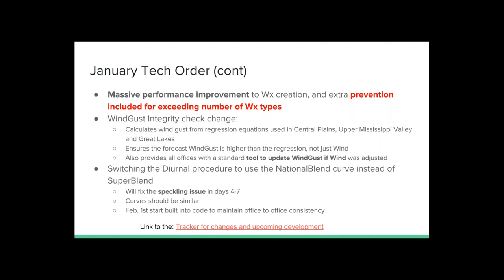Another thing: wind gust. We have an issue where if you modify the winds output from, say, the Superblend, you don't have anything for doing the gust. The integrity check right now is just checking whether wind gust is greater than wind — we need something more. Using some regression equations for the central plains, upper Mississippi Valley, and Great Lakes, there's basically one regression equation in there that's going to check to make sure your forecast wind gust is higher than the regression. It's just a nice integrity check as part of step four to make sure the wind gust is still good.